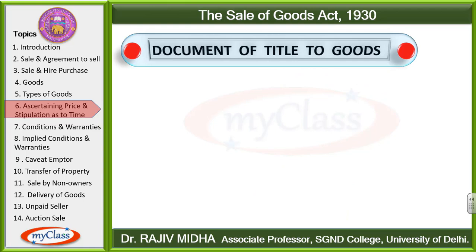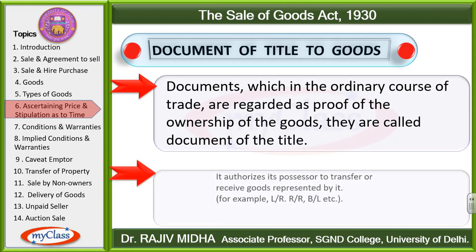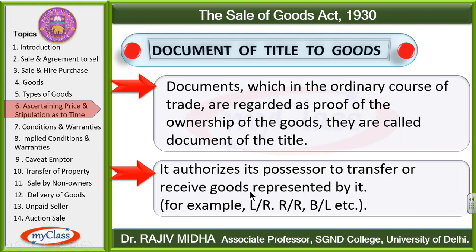Document of title to goods: Title means ownership. Documents which in the ordinary course of trade are regarded as proof of ownership of goods are called documents of title. The person named in such a document can receive the goods and also transfer the goods to someone else. Examples include LR (Lorry Receipt), RR (Railway Receipt), BL (Bill of Lading), etc.